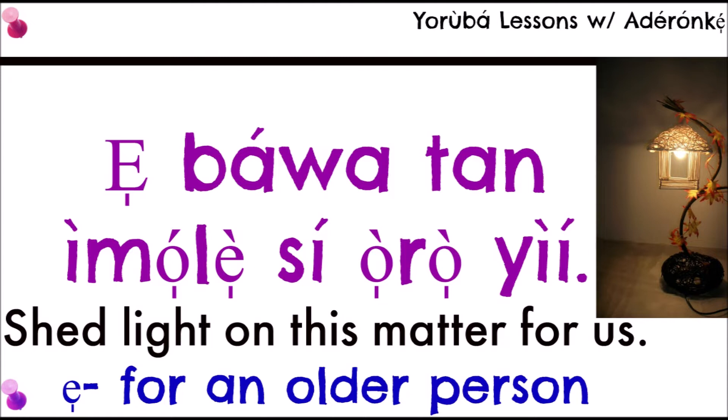I'm using 'e' because the person I'm speaking to is either older than me, or I'm talking to two or more persons of any age. If the person is younger or my age mate, I would say 'tàmọlẹ sí oròyí.' If I'm speaking only for myself, I drop 'bá wa,' but if there are two or more people with me, I say 'bá wa tàmọlẹ sí oròyí' — shed light on this matter for us.